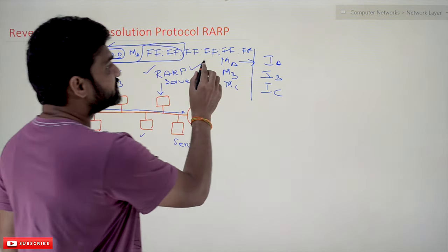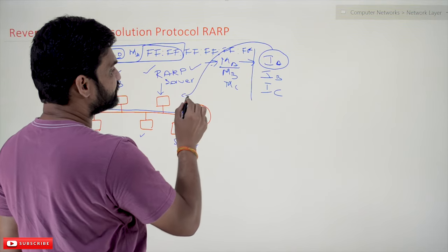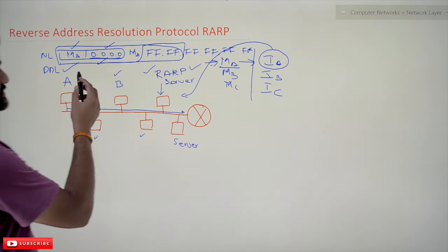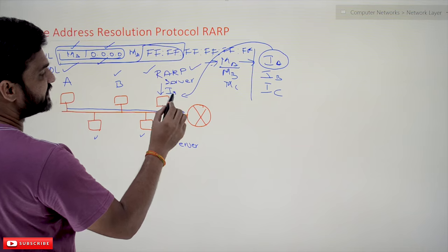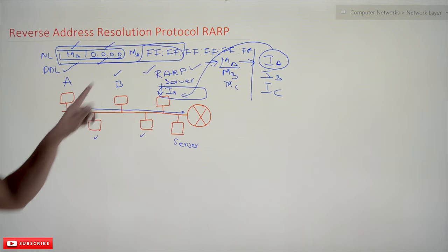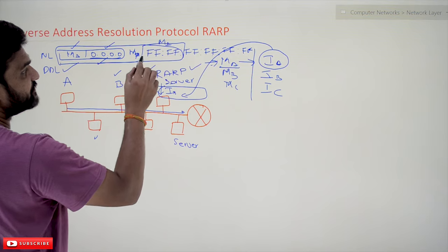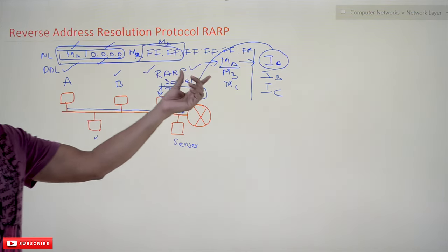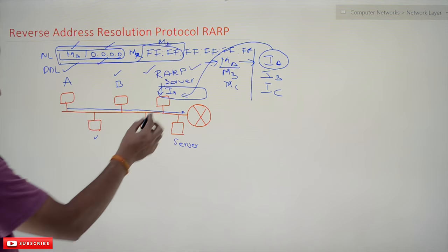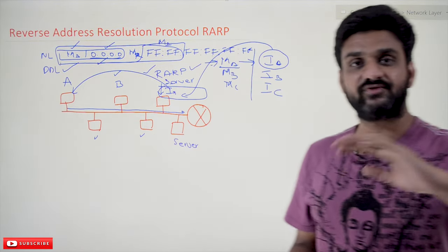The RARP server looks up its table and finds the corresponding IP address for MAC address MA. The IP address is then sent back as a RARP reply. The reply packet contains the IP address, and it is unicast — meaning it is directly transmitted, not broadcast. The destination MAC address in the reply is MA and the source is MR (the RARP server's MAC address). System A receives this unicast reply, gets its IP address, and can connect to the internet.